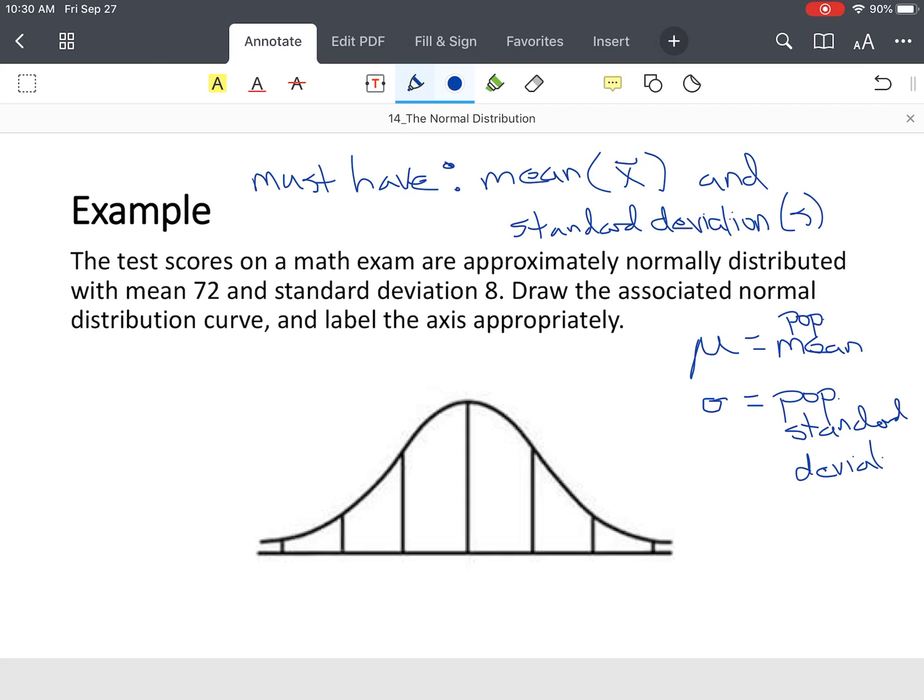There is a difference between the population standard deviation and mean, and the mean of the sample and the sample standard deviation. But in this case, the mean is 72, the standard deviation, remember that's a measure of spread, equals 8, and we want to draw the curve. The first thing we do is put the mean in the middle, 72.